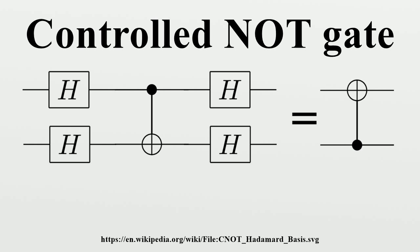The CNOT gate can be represented by a matrix. The first experimental realization of a CNOT gate was accomplished in 1995, where a single beryllium ion in a trap was used. The two qubits were encoded into an optical state and into the vibrational state of the ion within the trap. At the time of the experiment, the reliability of the CNOT operation was measured to be on the order of 90%.